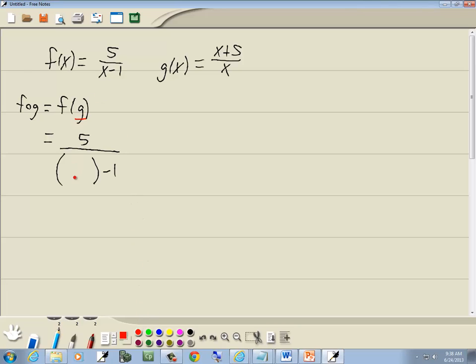Now, whatever's inside this parentheses, which is g, is what we're going to plug in here. But g is equal to x plus 5 over x. Now, this is a complex fraction. We need to get rid of the complex fraction. A complex fraction is a fraction inside of a fraction.